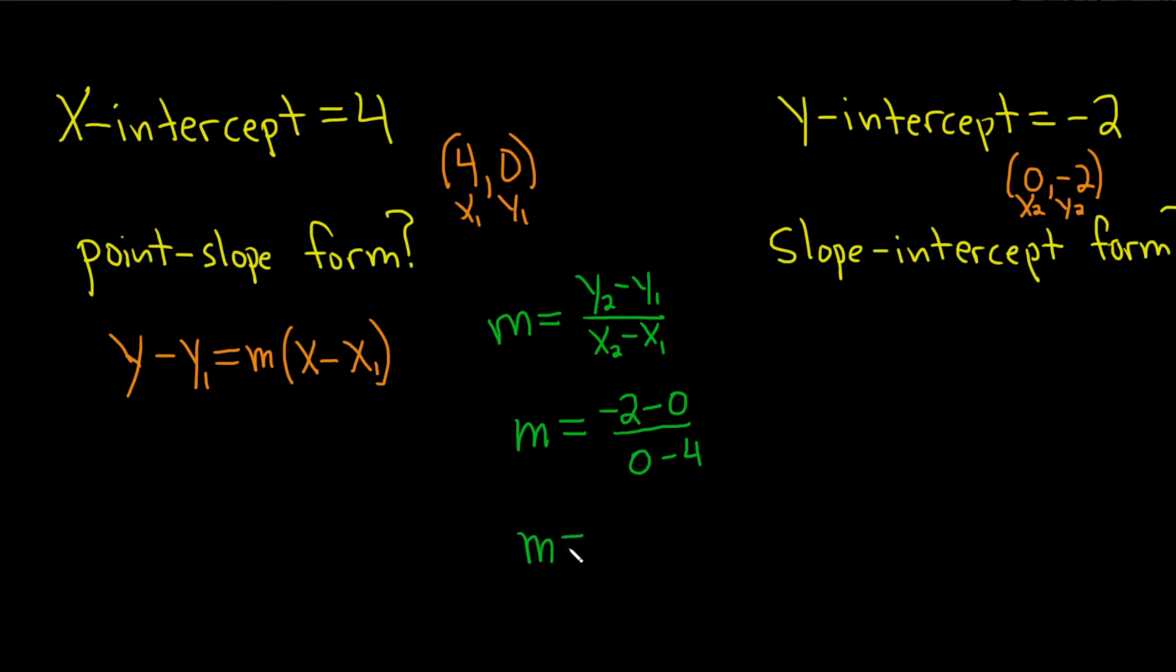So m is equal to negative 2 over negative 4. So m is equal to 1 half. That is our slope. Now we're good. Now we just take this and we take our m and we plug it in.